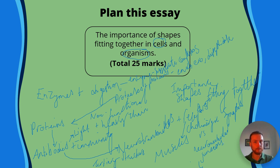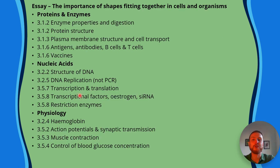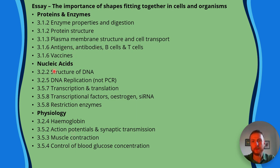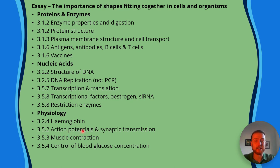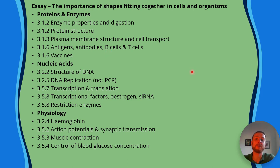That's how I would plan the essay — it's a bit scruffy with digital inking, but hopefully you get some ideas. The relevant topics available for this title include enzyme properties and digestion, protein structure, plasma membrane structure and cell transport, antigens and the immune system, action potentials and synaptic transmission, and muscle contractions. All of the topics I chose — enzymes and digestion, proteins, antibodies and immunity, neurotransmitters, and muscles — are represented there. If your chosen topics weren't relevant, choose another essay title and have another go.